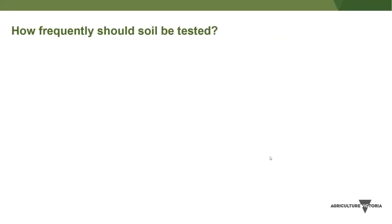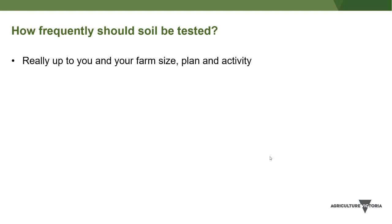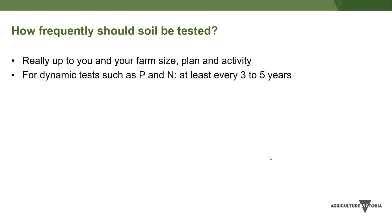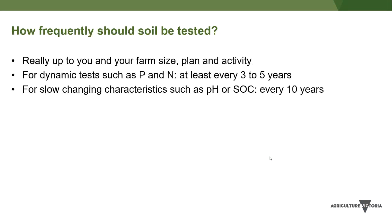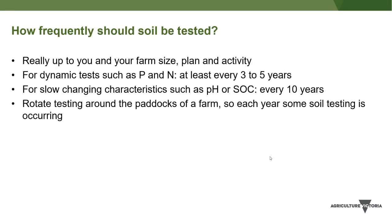How frequently should you soil test? It really depends on your farm size, plans, and activity. For dynamic tests such as phosphorus and nitrogen — things that change and that we have influence over — a guide is every three to five years. For slower-changing characteristics like pH or organic carbon, less frequently, perhaps every ten years. Rotating testing around paddocks of a farm each year is also a really good strategy.